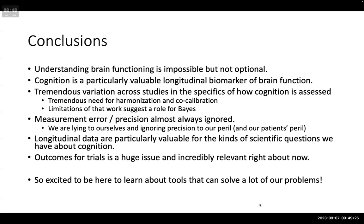My conclusions: understanding brain functioning is both impossible and not optional. Cognition is a particularly valuable longitudinal biomarker of brain function. There's tremendous variation across studies in how cognition is assessed and tremendous need for harmonization, co-calibration, and the limitations of that work really suggest a potential role for Bayes. Measurement error and precision are almost always ignored in the work we do, and that's a problem. Longitudinal data are particularly valuable for the scientific questions we have about cognition, and outcomes for trials is a huge issue right now, given the first medications that seem to have an impact.